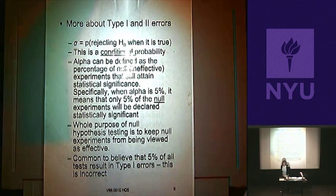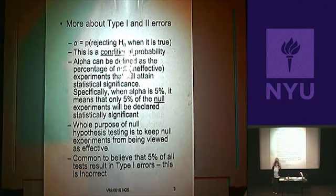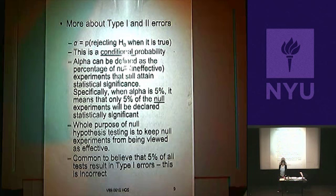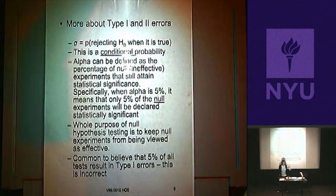Alpha is the percentage or probability of ineffective experiments that still achieve significance — there really is no effect, but they nevertheless attain significance. For example, if a researcher did 100 significance tests with alpha set to 0.05, how many Type 1 errors do you think were made? We don't have enough information because we don't know how many of those 100 experiments are ineffective or null.